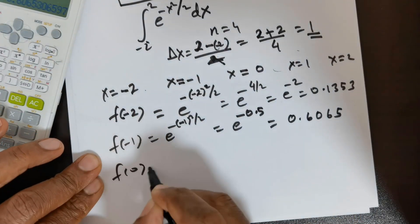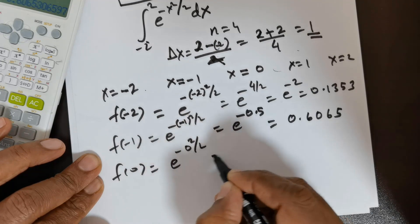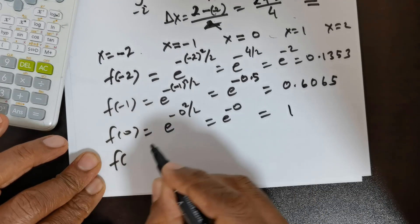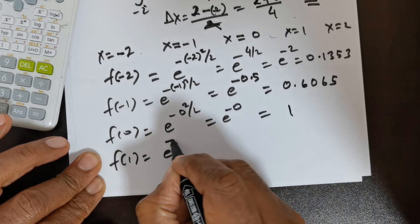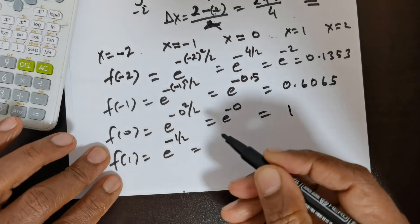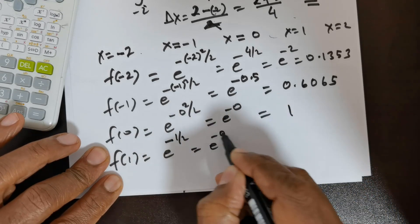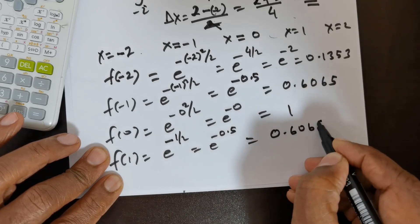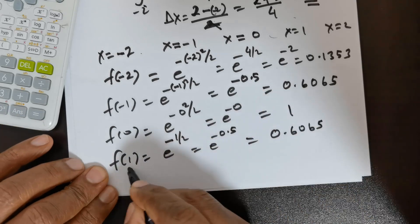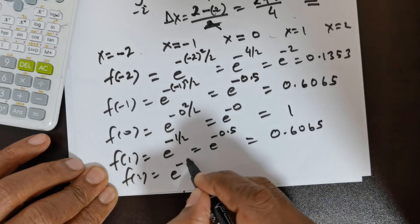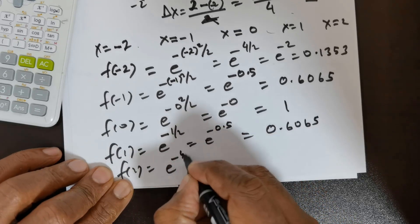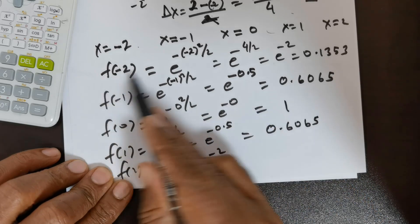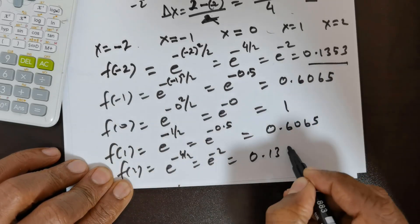Next is f(0), which is e raised to the power of negative 0 squared divided by 2, which is e to the power of 0, giving 1. Next is f(1), which is e raised to the power of negative 1 over 2, so e to the power of negative 0.5, which equals 0.6065. And f(2) is e raised to the power of negative 4 divided by 2, which is e to the power of negative 2, giving 0.1353.